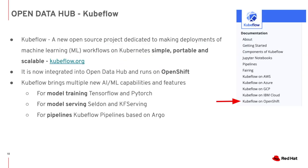As part of the Open Data Hub project, we see potential and value in the Kubeflow project, so we dedicated our efforts to enable Kubeflow on Red Hat OpenShift and integrate Open Data Hub with Kubeflow in one operator installation. It is now integrated into Open Data Hub and runs on OpenShift. Kubeflow brings multiple new AI/ML capabilities: for model training we have TensorFlow and PyTorch, for model serving we have Seldon and KF Serving, and for pipelines we have Kubeflow Pipelines based on Argo. We also worked with the Kubeflow community to add OpenShift as one of the supported platforms, and we are releasing the Open Data Hub 0.6.x operator with Kubeflow integrated.